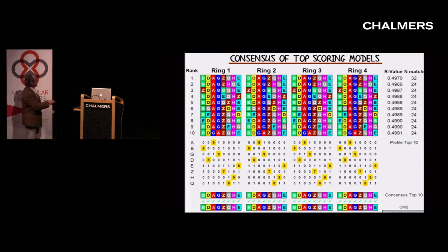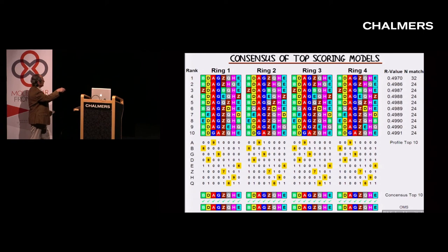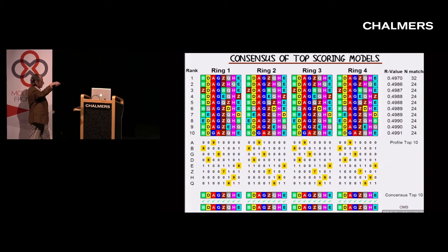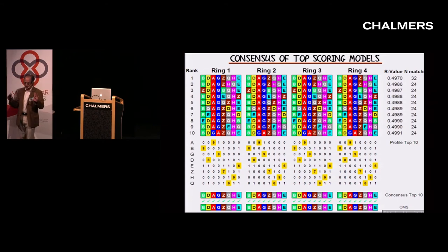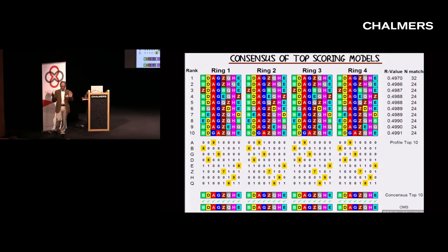When you rank them by decreasing R value, you get all these sequences. Everyone has to be different. But you can immediately see a consensus — this line is almost always B, this is D, this is A, this is G, etc. So the consensus of all of those, which is just the most common one, actually happens to be exactly the same as the top one and exactly the same as the mass spec structure. So now we felt pretty much convinced that this was the right ordering.